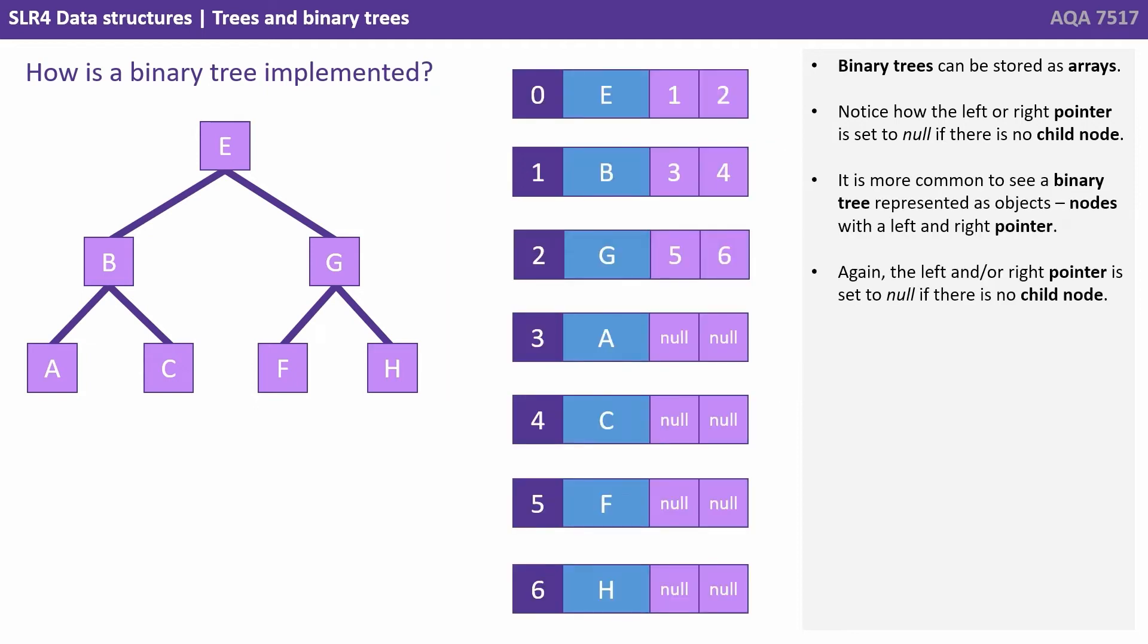It is more common to see binary trees represented as objects. Nodes with a left and right pointer. Again the left or right pointer is set to null if there is no child node.